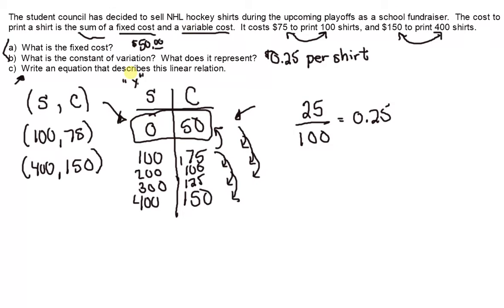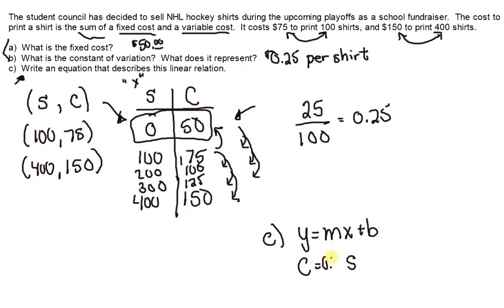Write an equation that describes this linear relation. We know that this is in the form Y = MX + B. Using C and S, our constant of variation is 0.25 and our Y-intercept or starting point is $50, giving us C = 0.25S + 50.